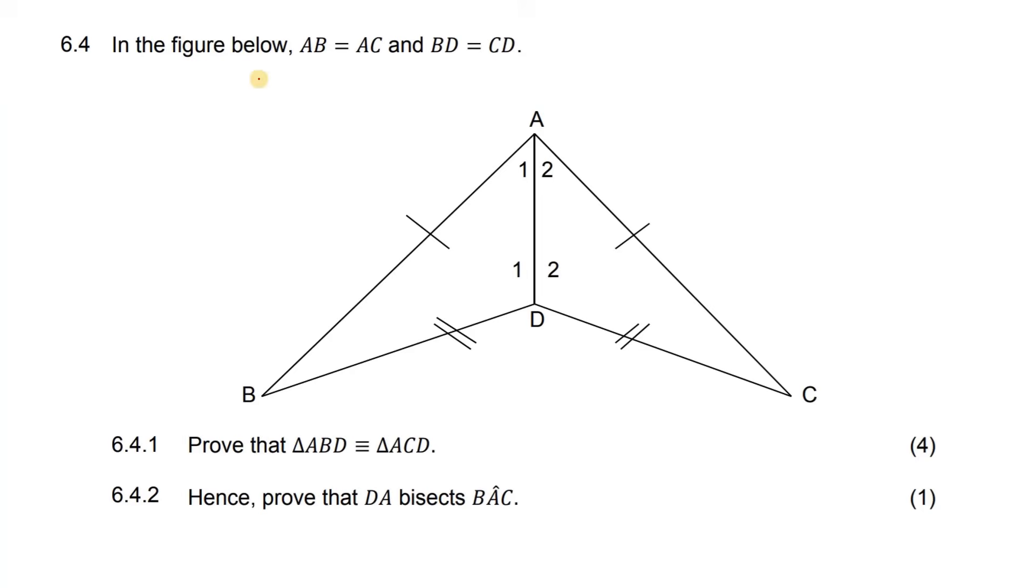In the figure below, AB is equal to AC. So you see how they told us that they're equal in length, and then they also showed it to us. So those two sides have the same length.